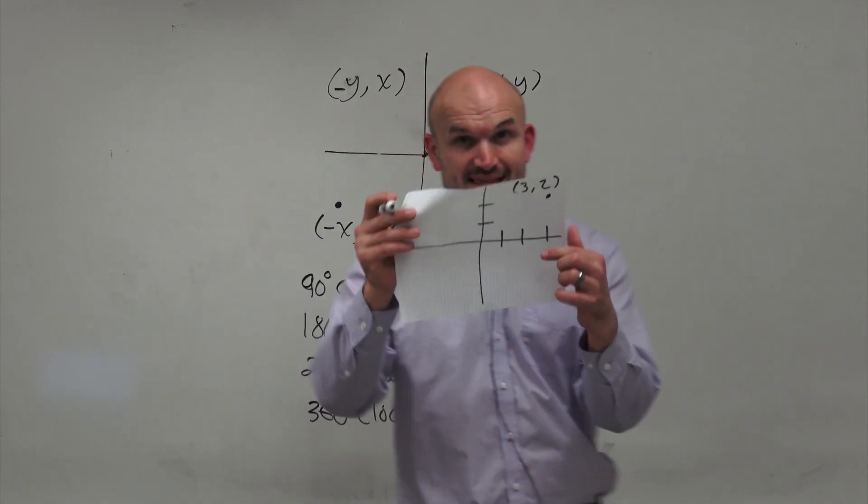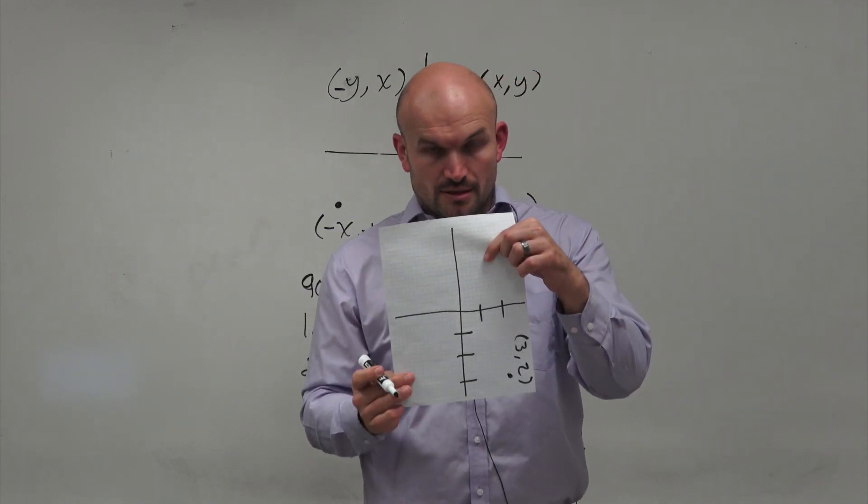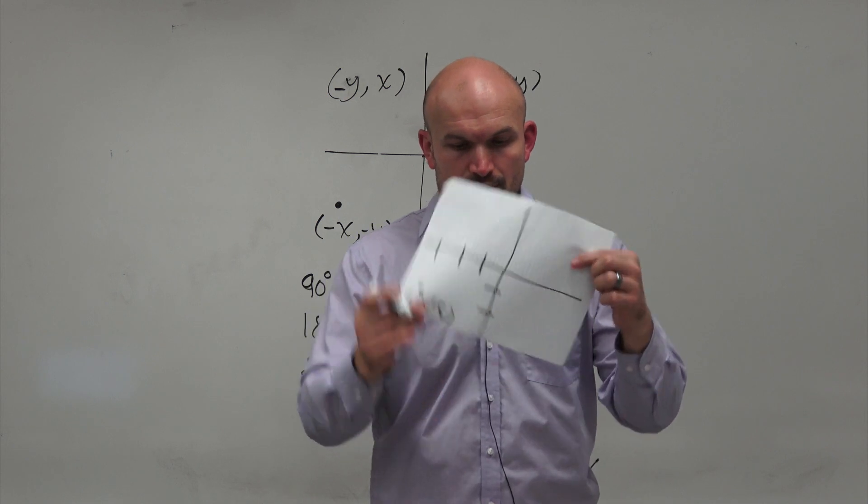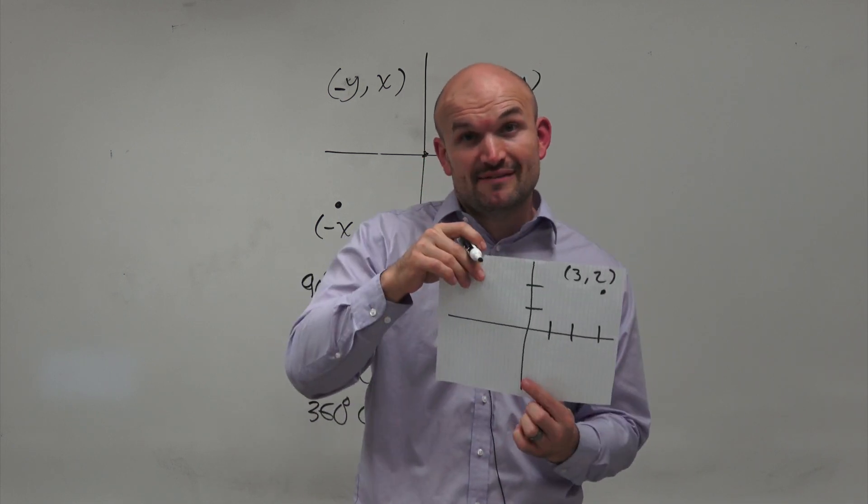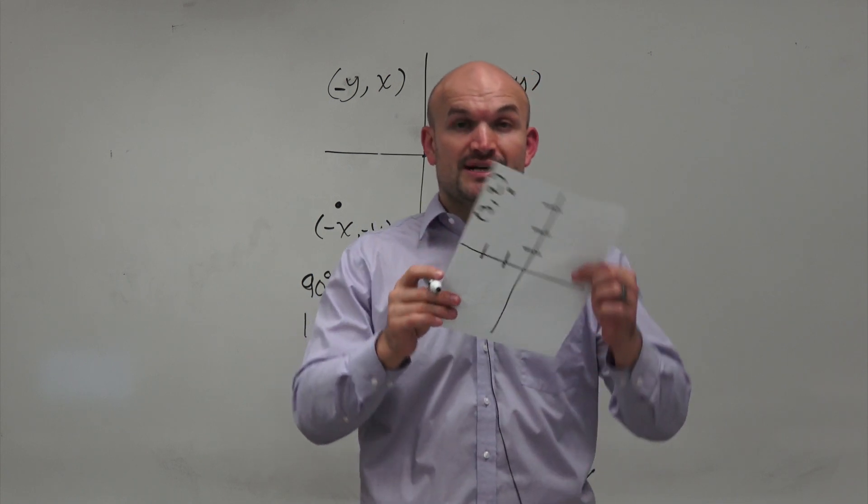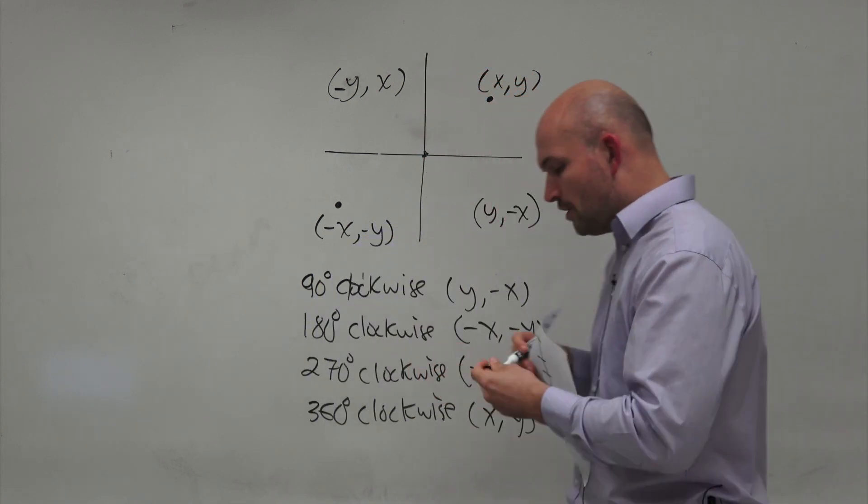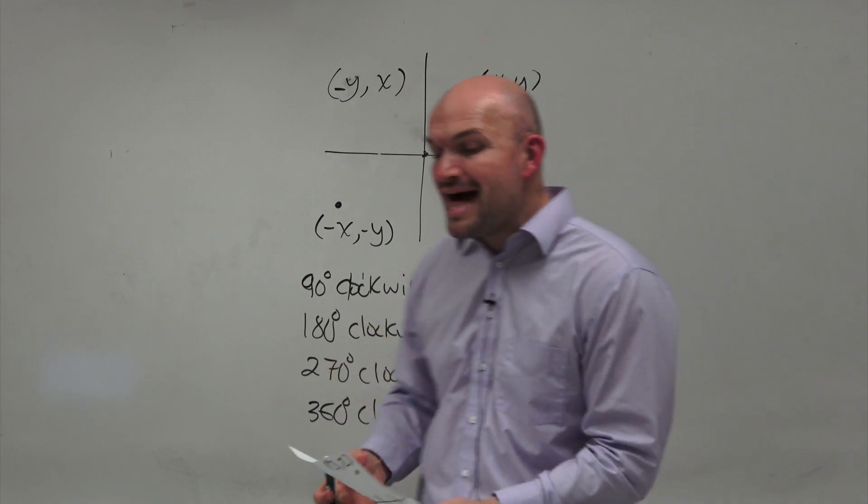Right? Because if I take this and I go clockwise, so that's 90, 180, 270, and then 360, right? And recognize that that 270 is the same thing as going 90 degrees counterclockwise. So we really need to only understand the directions in one way.